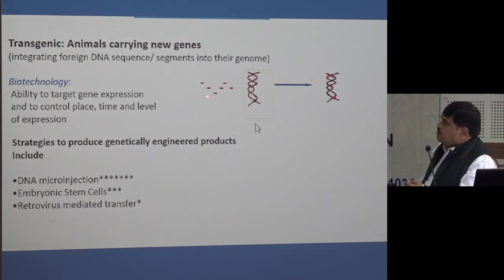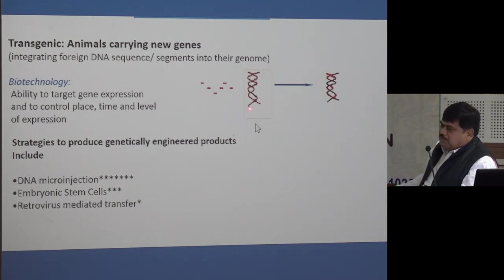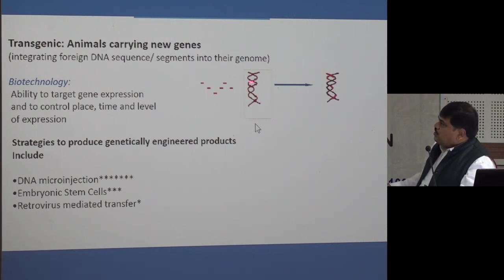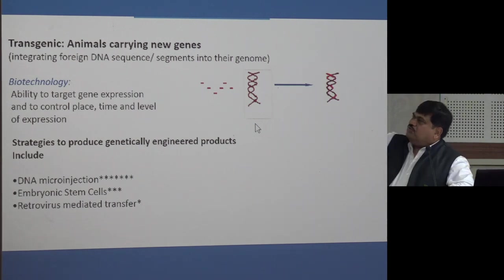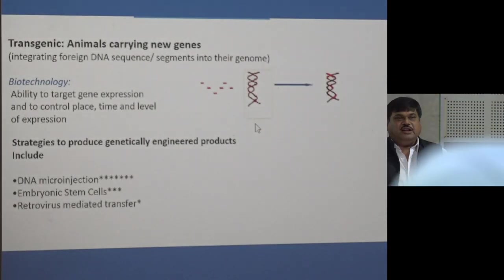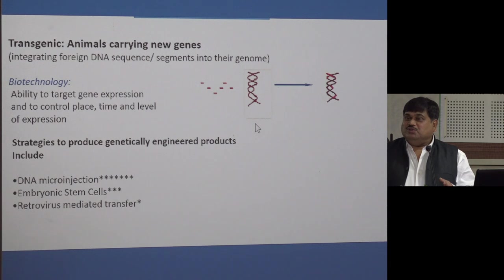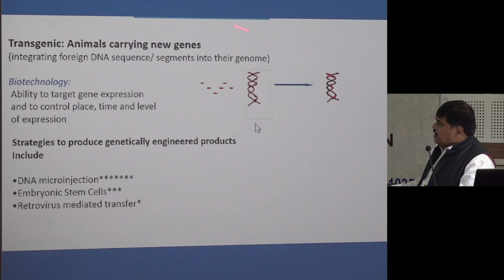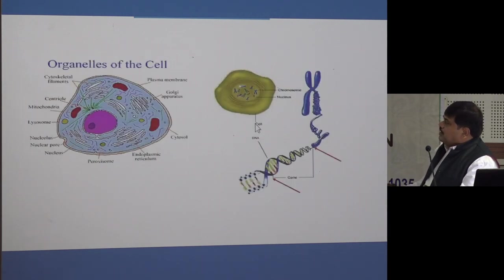We use mice because you cannot do experiments in human beings. The foreign gene whose function we want to know is incorporated during embryogenesis. When the individual is born with those new genes, we can observe whether it loses hair, grows hair, or shows some good or bad phenotype. This is how gene function is studied.